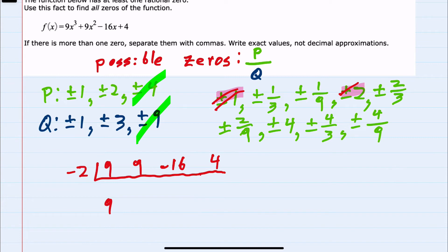I'll try negative 2. Negative 2 times 9 is negative 18. Adding 9 and negative 18 is negative 9. Negative 2 times negative 9 is positive 18. Adding gives me 2. And then multiplying negative 2 times 2 is negative 4. So this division has no remainders. We know that one of the zeros will be negative 2.